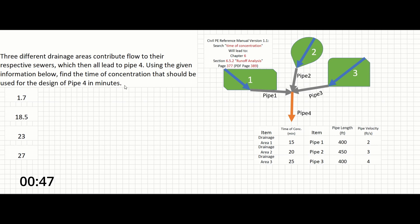Our objective is to find the time of concentration used for pipe 4. This problem is very easy if you know what the time of concentration is. If you don't, you can look on page 377 of the reference manual, where it defines it as the time required for the runoff to travel from the hydraulically most distant point of the watershed to the point of interest. It even notes that multiple watersheds may require summation of times to determine an overall time for the system.